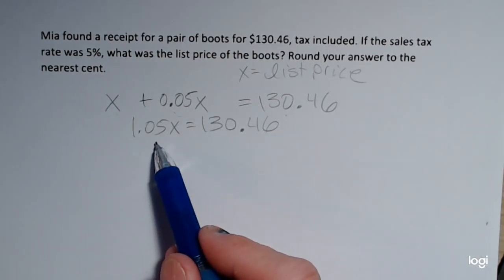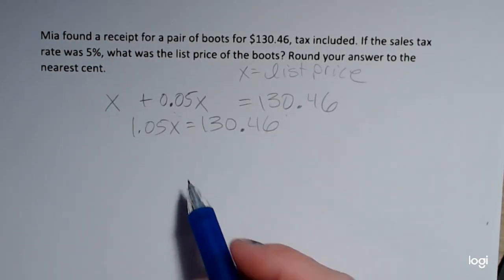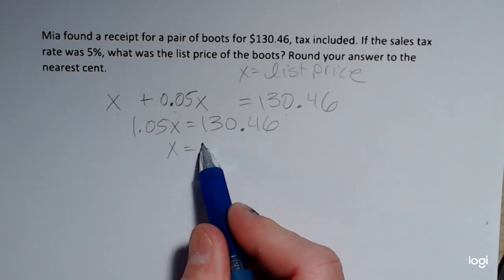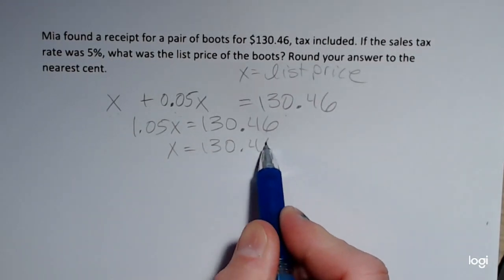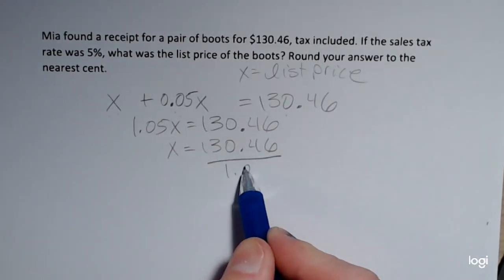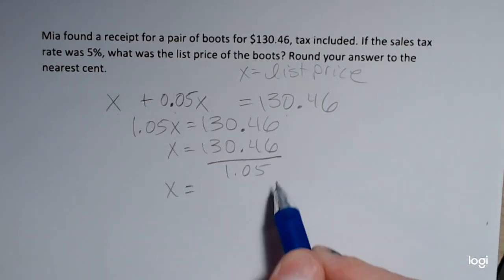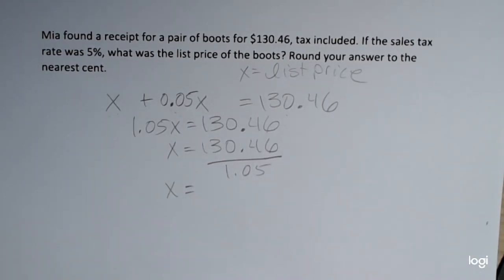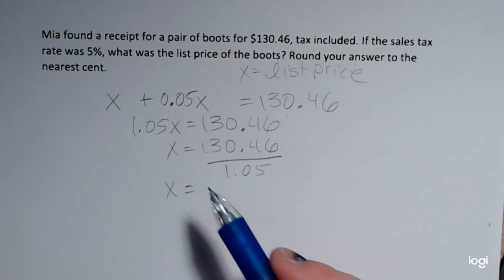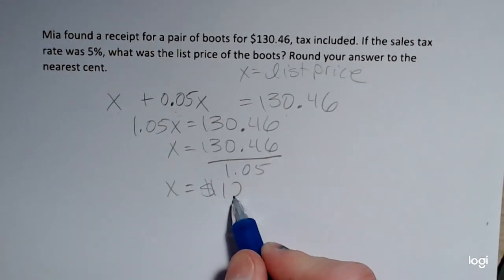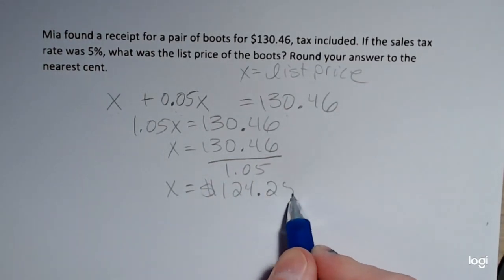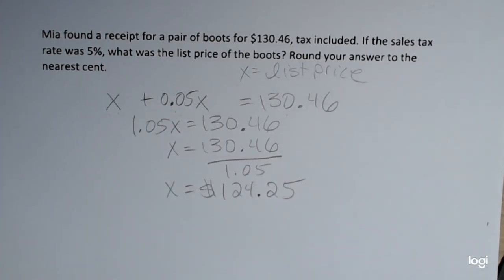Last step here is to divide both sides of the equation by 1.05. And then doing this division in the calculator and rounding to the nearest cent, the list price is $124.25.